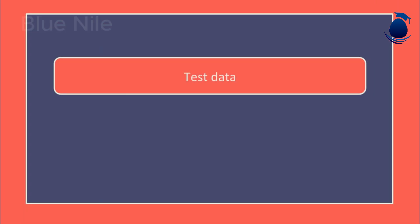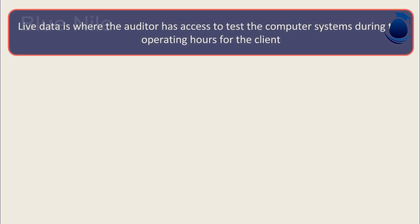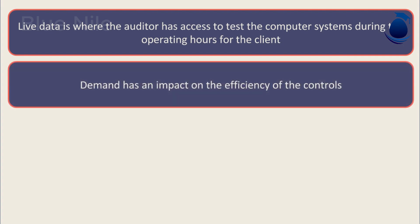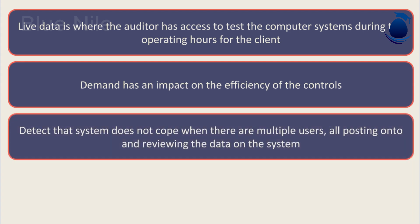There are two ways the auditor can perform test data: live and dead data. Live data is where the auditor has access to test the computer systems during the client's operating hours. The benefit is that it allows the auditor to assess whether demand has an impact on the efficiency of the controls — for instance, detecting that the system does not cope when there are multiple users posting or reviewing data.